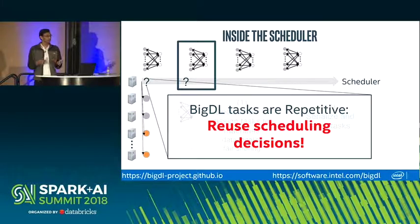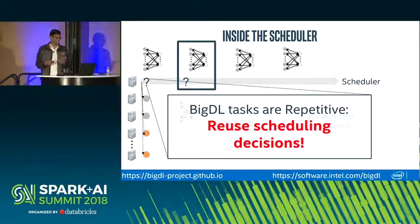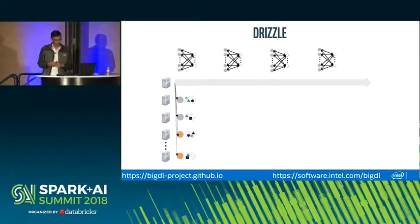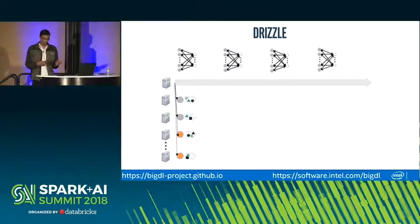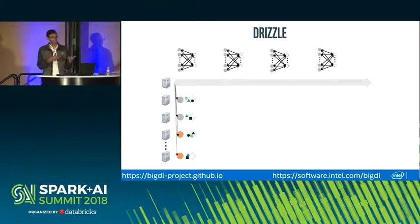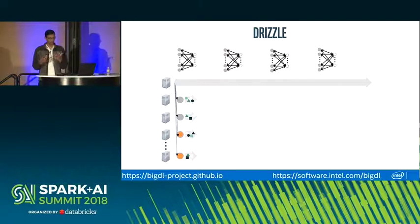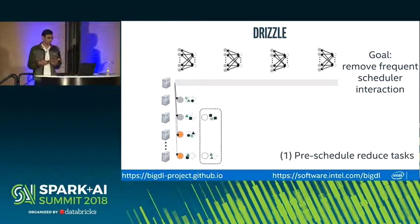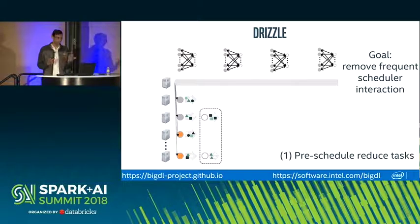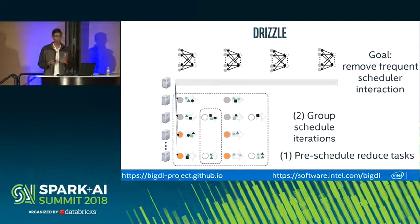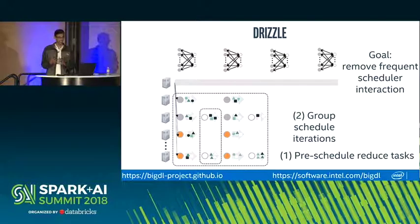Using this insight, we can reuse scheduling decisions across iterations and avoid the costly scheduling overhead that was being run for every iteration. We did this as part of a research project called Drizzle at Berkeley and integrated it with the BigDL framework at Intel. The two main techniques in Drizzle are: one, pre-schedule reduce tasks, and two, group-schedule iterations of computation.